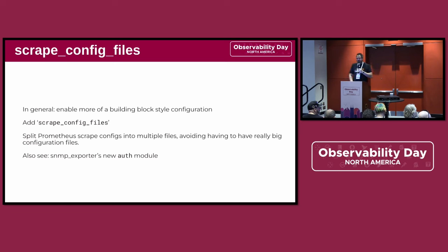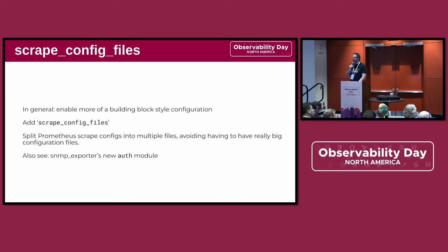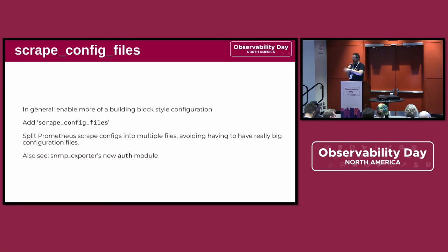We now allow you to actually build your configuration from an abundance of independent files. I've probably been doing this through shell scripts since 2015. But now this is actually a first-class feature, so you can build your configuration from distinct blocks, which makes a lot of automation easier. It also allows you to have a common theme across different instances, and maybe a special one on your own laptop. It's just much more malleable — more of a building block approach for your config files.